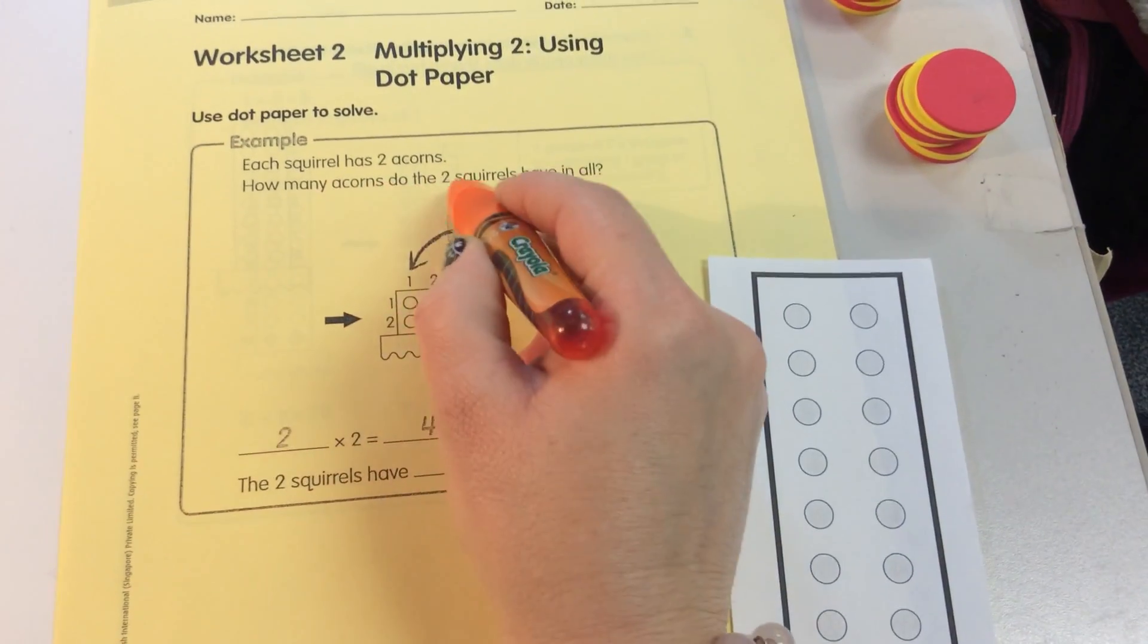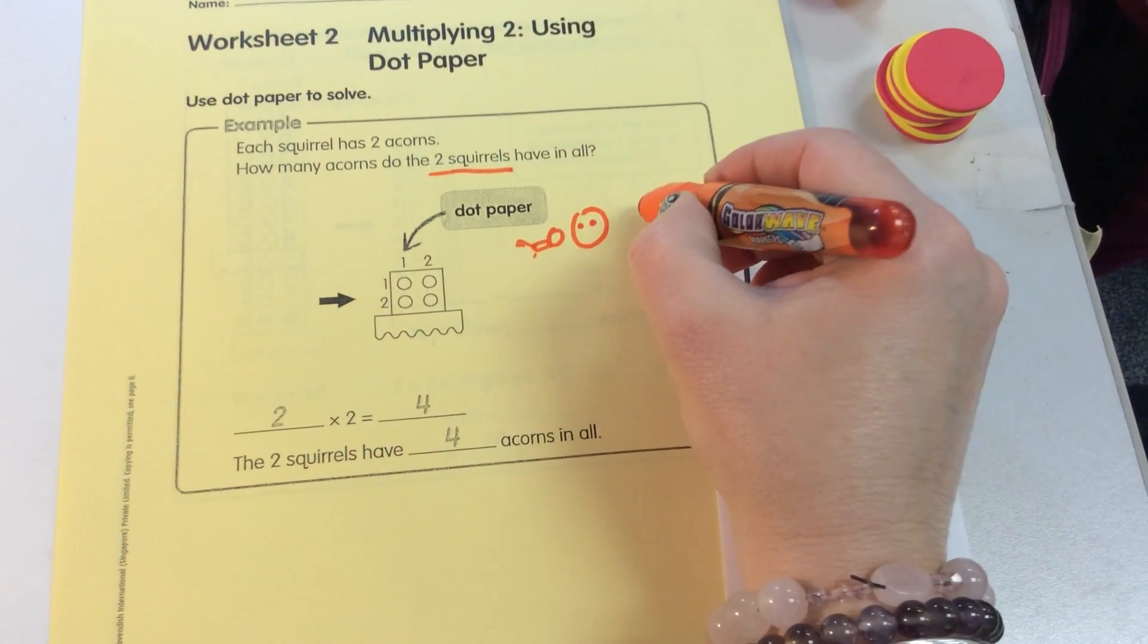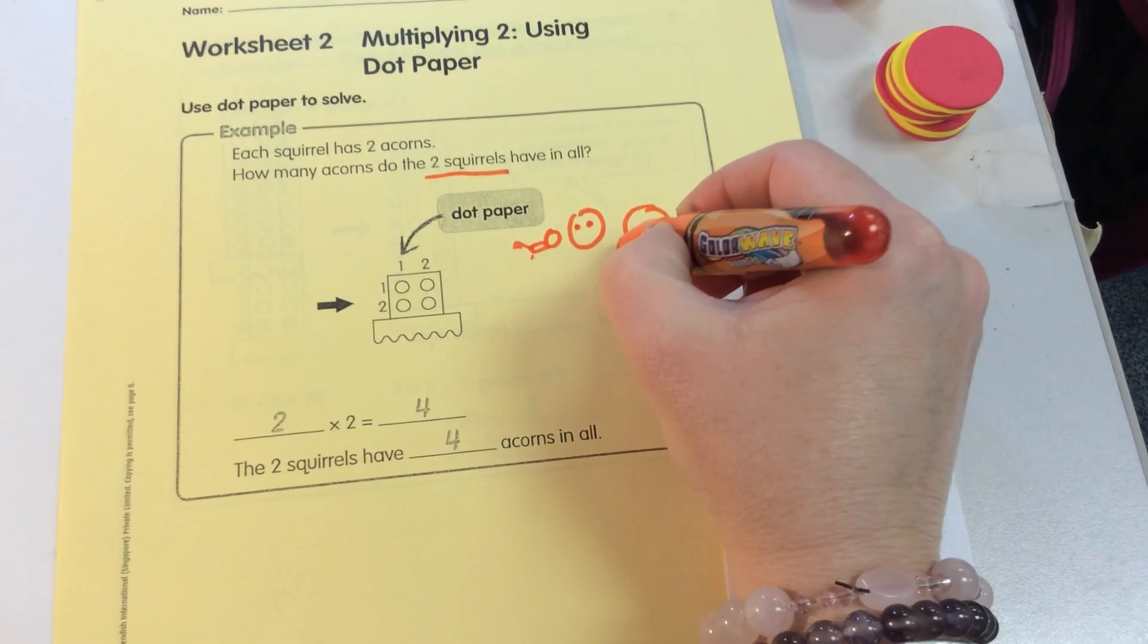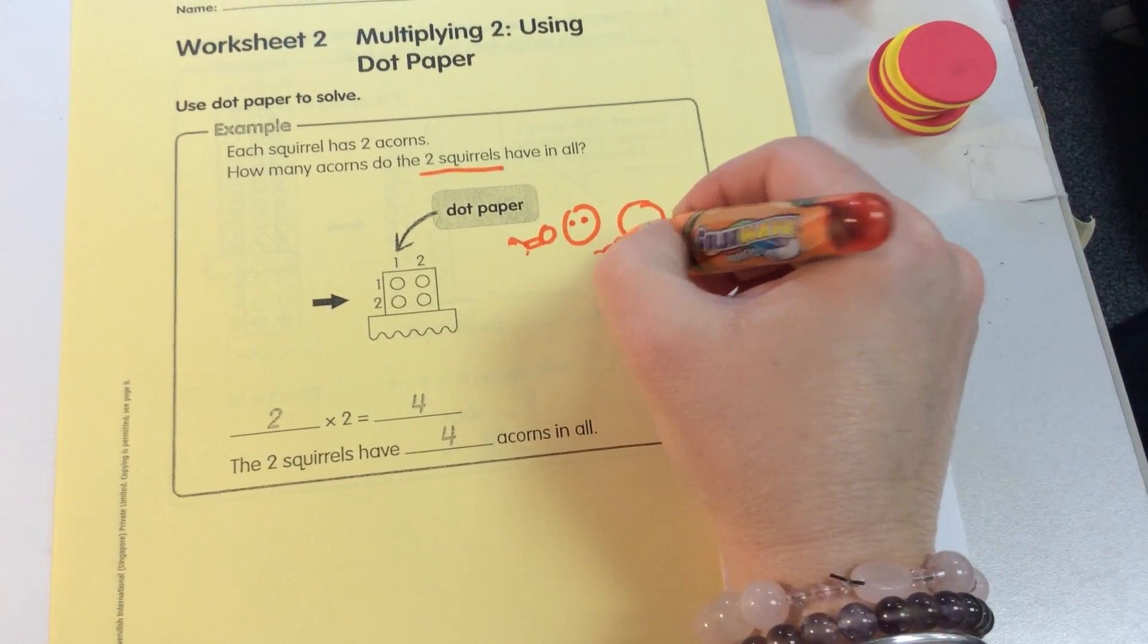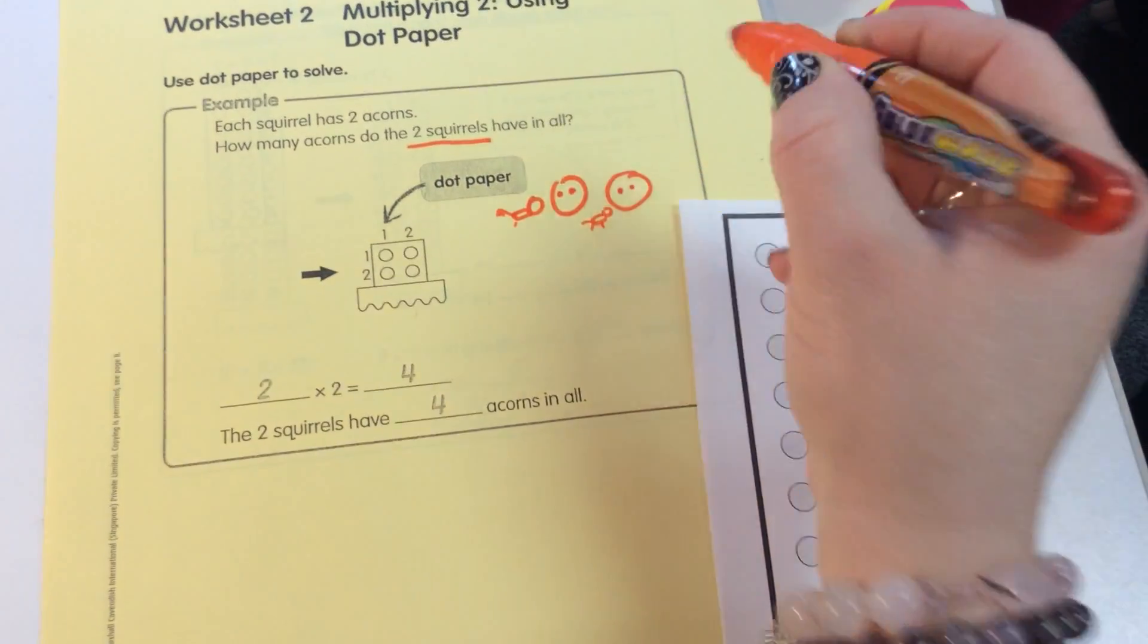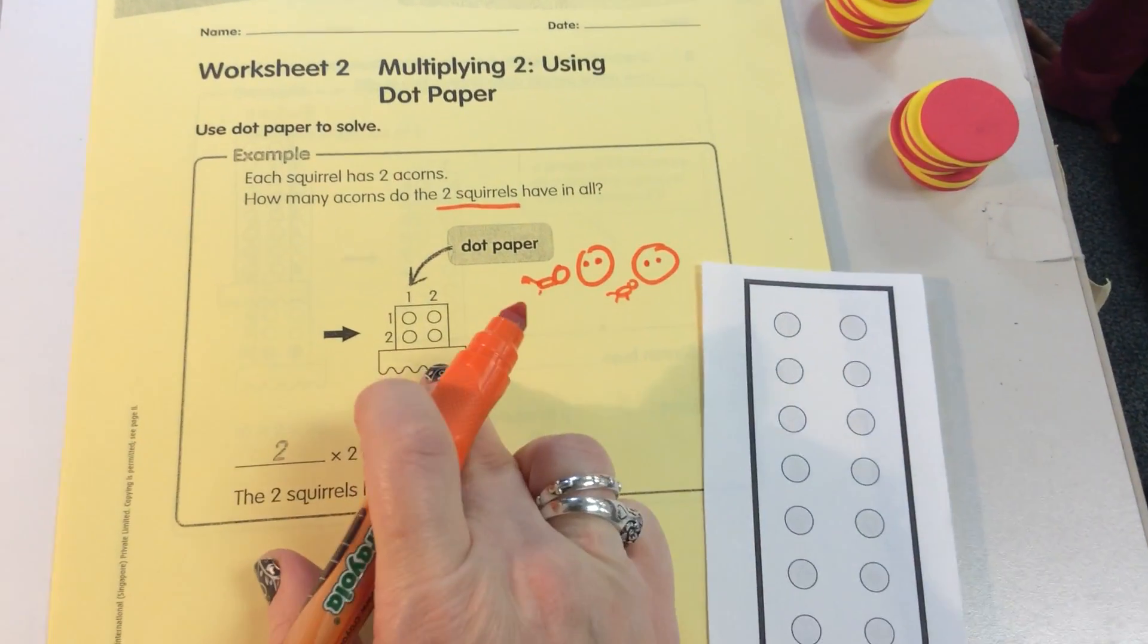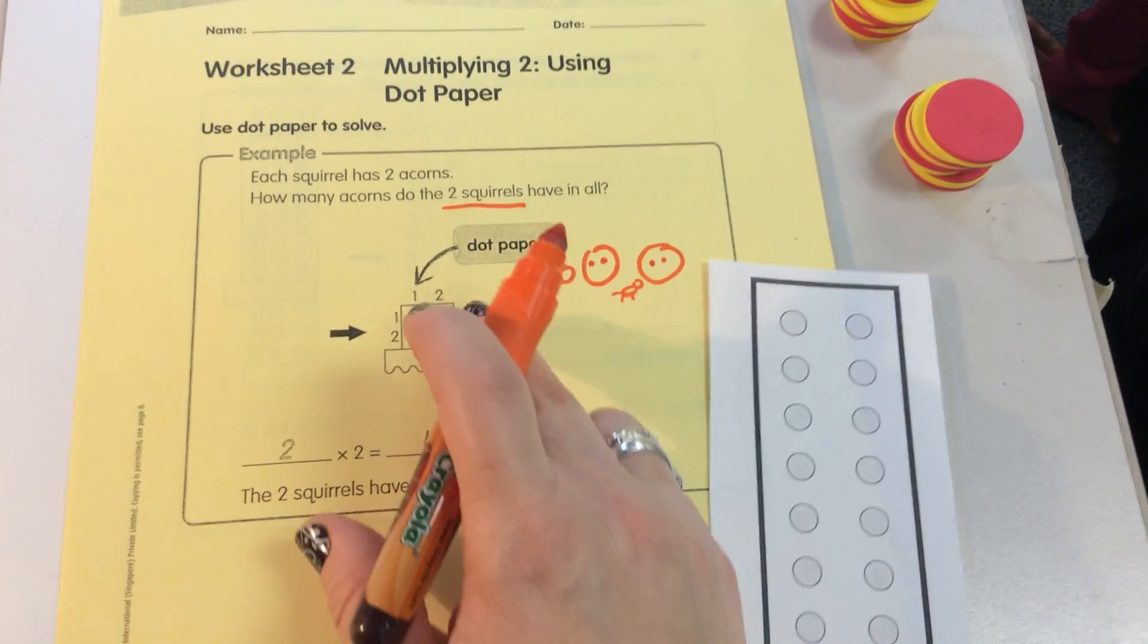How many acorns do 2 squirrels have in all? So we have another squirrel. Here's the other squirrel. And she also has 2 acorns. But we're going to be using this dot paper to figure it out.